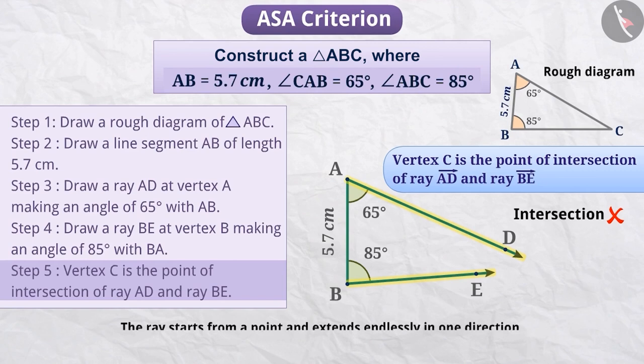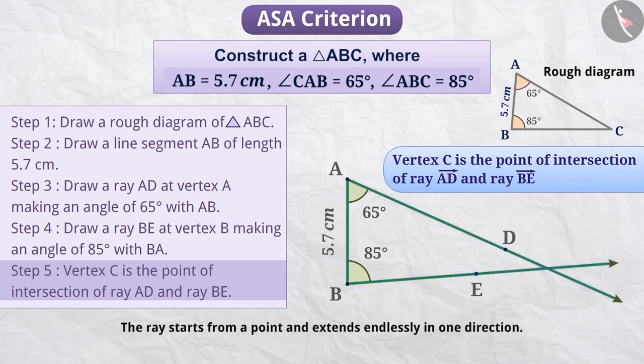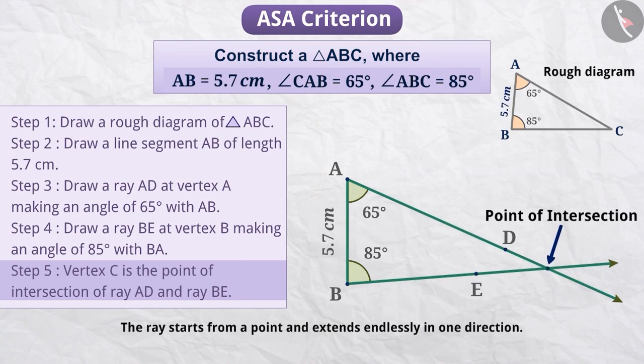Absolutely correct. Since the ray starts from a point and extends endlessly in one direction, we can also extend the rays. This will give us the point of intersection, which is the vertex C of triangle ABC.